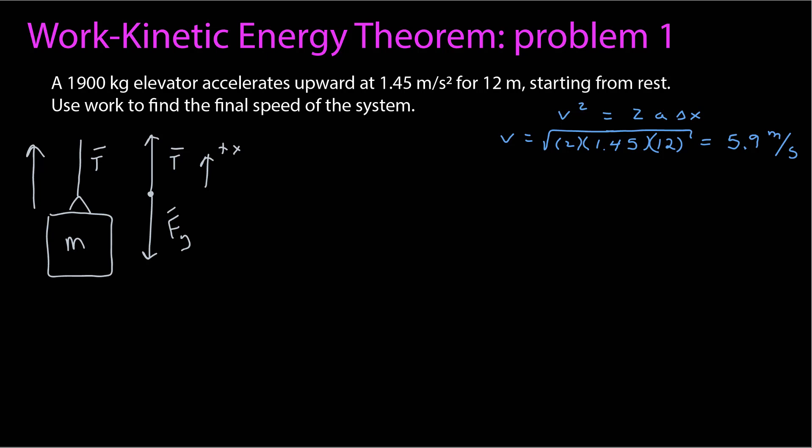Let's go back and think about what we know. We want to use work and find the final speed of the system. And we know that connection is through the work kinetic energy theorem. The work is equal to the change in kinetic energy. The change in kinetic energy is the final energy minus the initial. The initial is zero since we know it starts at rest. And the final kinetic energy is 1 half mv squared. This is our connection now between the work and the final speed of the system.